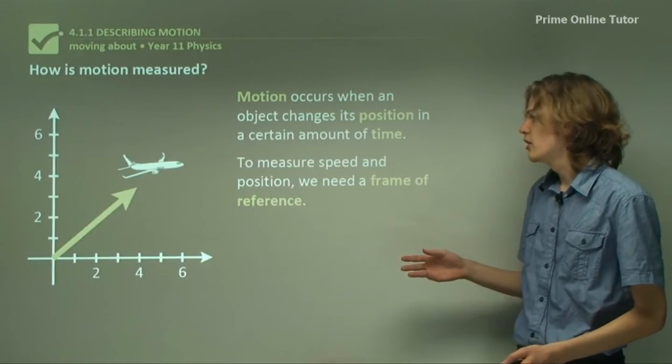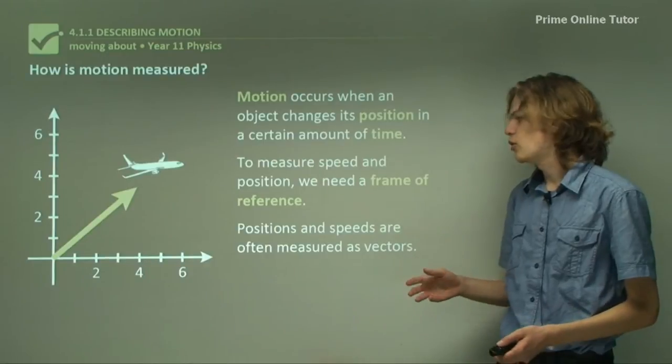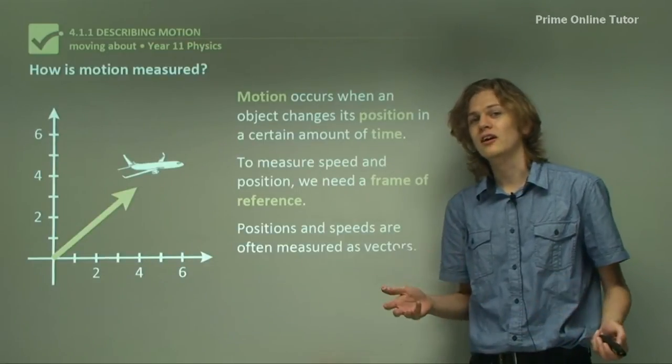And to measure speed and position, we need a frame of reference. So positions and speeds are often measured as vectors. We'll learn a little about what vectors are later on.